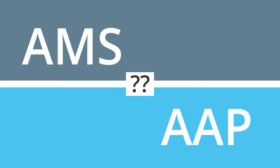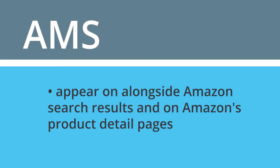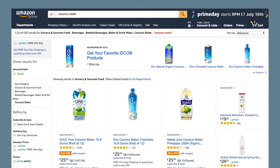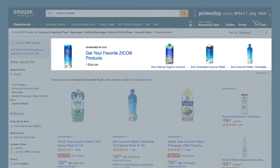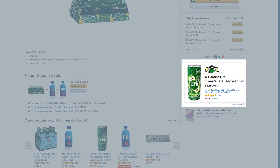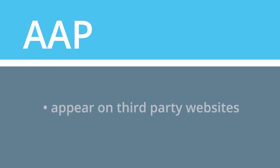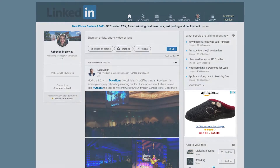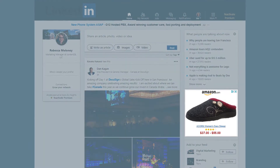So what's the difference between AMS and AAP? AMS ads appear alongside Amazon's search results and on product detail pages, targeting people who are already actively shopping on Amazon. AAP ads appear on third-party websites, attempting to capture customers who aren't actively trying to buy.